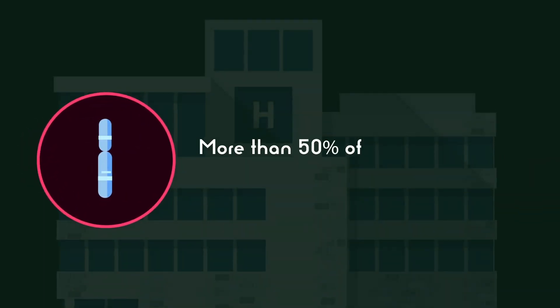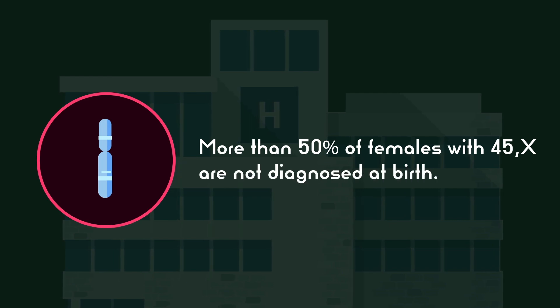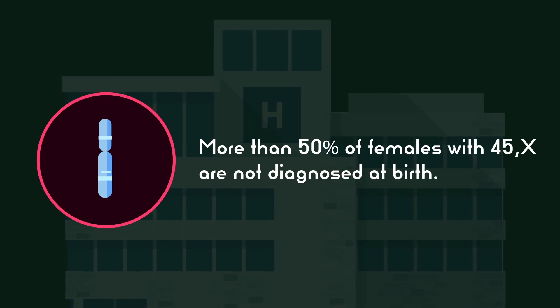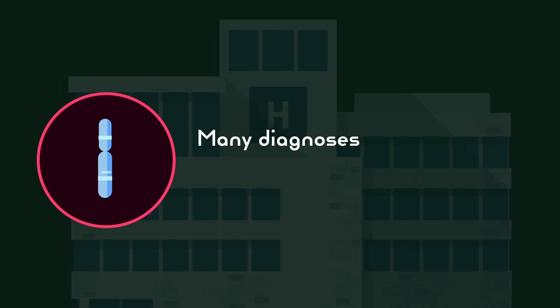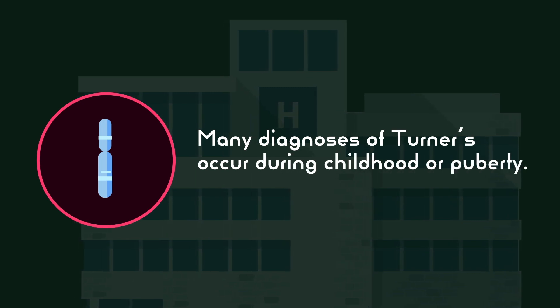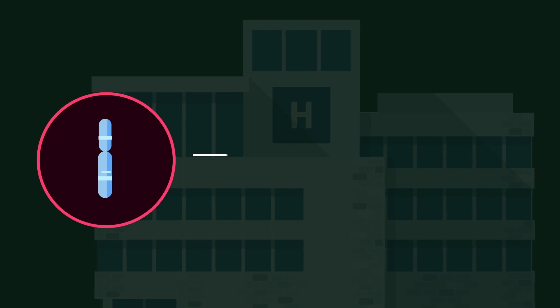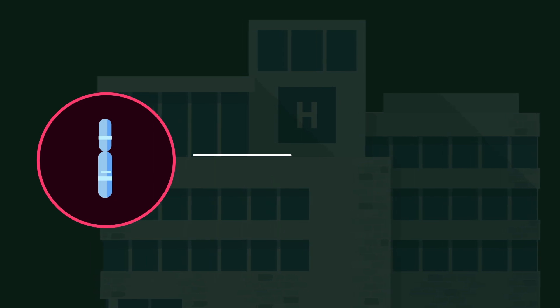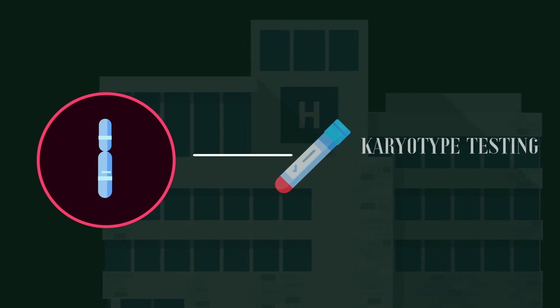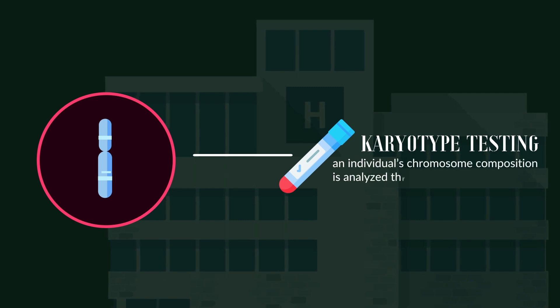More than 50% of females with 45X are not diagnosed at birth. Instead, many diagnoses of Turner Syndrome occur during childhood and into puberty when the physical differences become more apparent. Like Klinefelter's, the diagnosis for Turner Syndrome uses karyotype testing, where an individual's chromosome composition is analyzed through a blood sample.